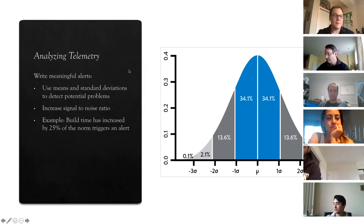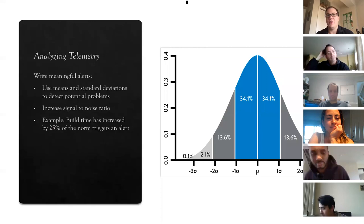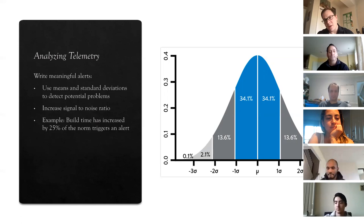Last time we talked about the types of information we should be gathering, when we should be gathering it, what those sources of information should look like, and how to know if we're collecting the right information. Now we're just going to look at how we can use that information to make decisions.